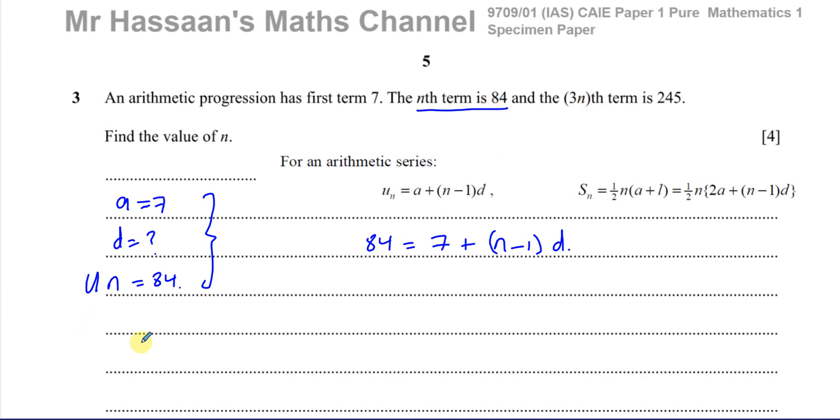And the 3nth term, so we can say that u3n, we're told is equal to 245. And again, we know the first term is 7 and d we don't know. So we can use the same formula. We can say that u3n, which is 245, is equal to a, which is 7, plus 3n minus 1 times d.